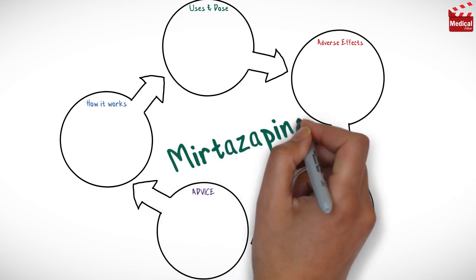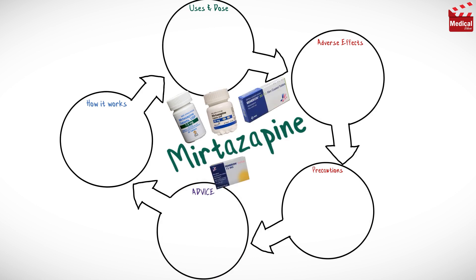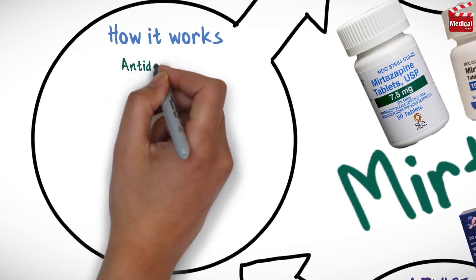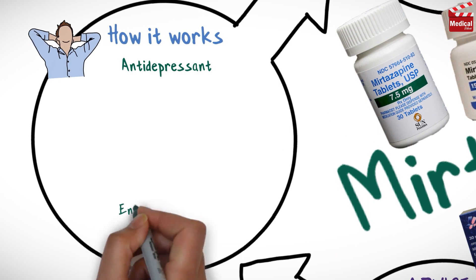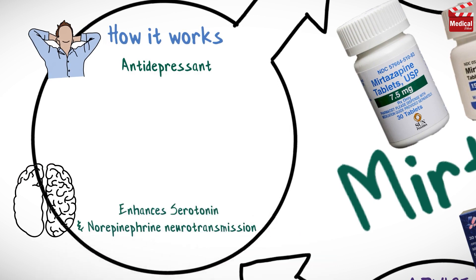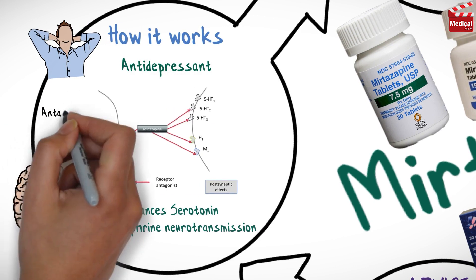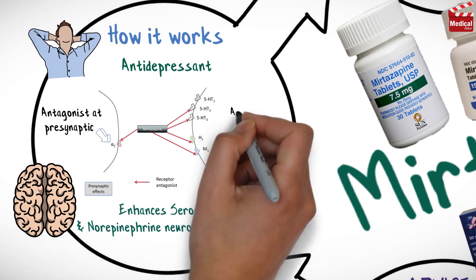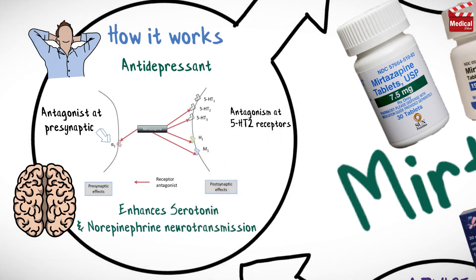In this video we will briefly discuss what is mirtazapine, how it works, what it's used for, the dose and side effects, contraindications and precautions. Mirtazapine is an antidepressant. It enhances serotonin and norepinephrine neurotransmission by serving as an antagonist at presynaptic alpha-2 receptors. Additionally, some of the antidepressant activity may be related to antagonism at serotonin type 2 receptors.